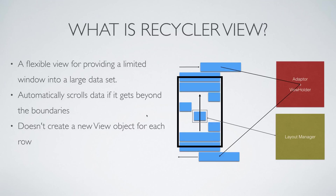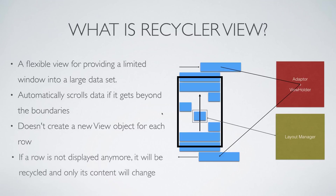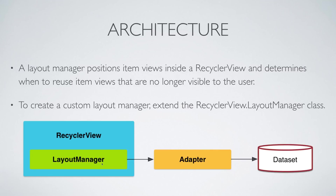If you have a thousand items to display, a thousand new objects are not created. Instead, as you scroll up, items at the bottom go out of the screen and are put back at the top without their previous data — the old data is removed and the adapter puts new data on the existing view objects. This process is called recycling, which is exactly why this view is called a RecyclerView. The adapter and the layout manager work independently of each other.